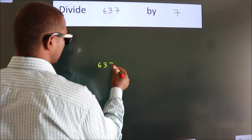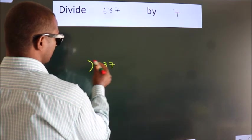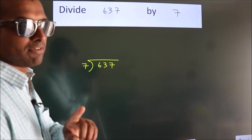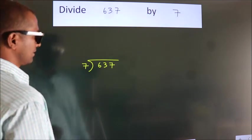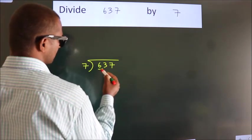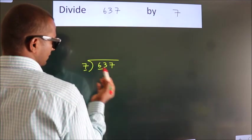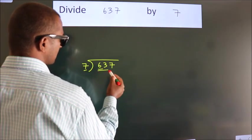637 here, 7 here. This is your step 1. Next. Here we have 6, here 7. 6 smaller than 7. So we should take 2 numbers, 63.